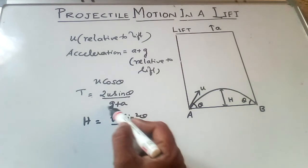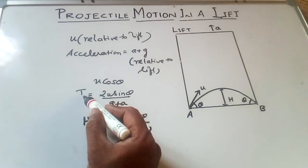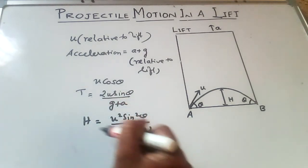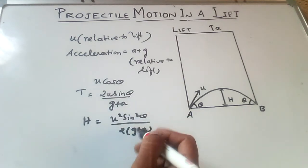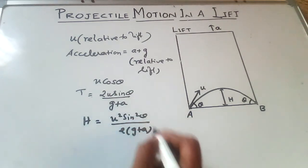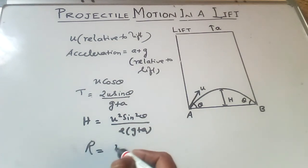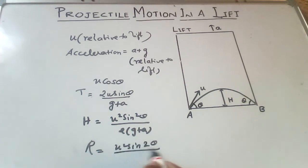Instead of G here, you can use G plus A in time of flight application also, and so that the maximum height also. And range, what about the range? Range is equal to U square sin 2 theta by G plus A.